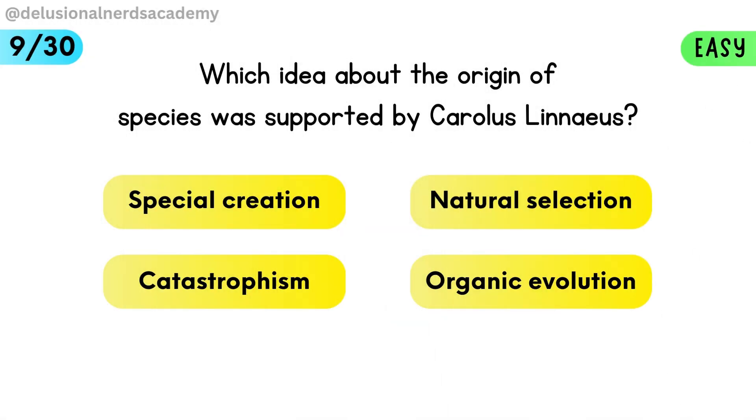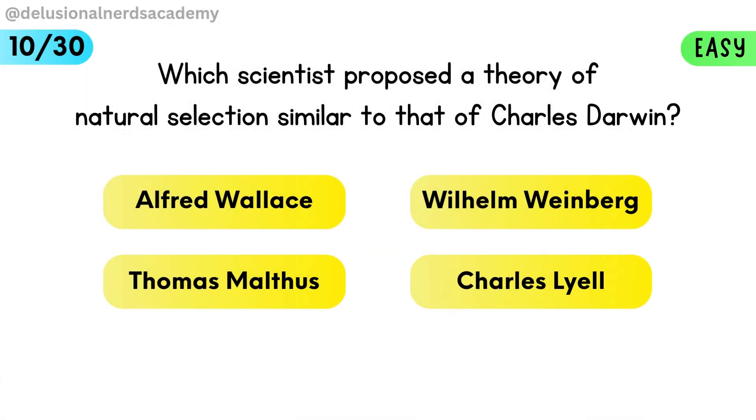Which idea about the origin of species was supported by Carolus Linnaeus? Linnaeus supported the idea of special creation. Which scientist proposed a theory of natural selection similar to that of Charles Darwin? Alfred Wallace proposed a theory of natural selection similar to Darwin.